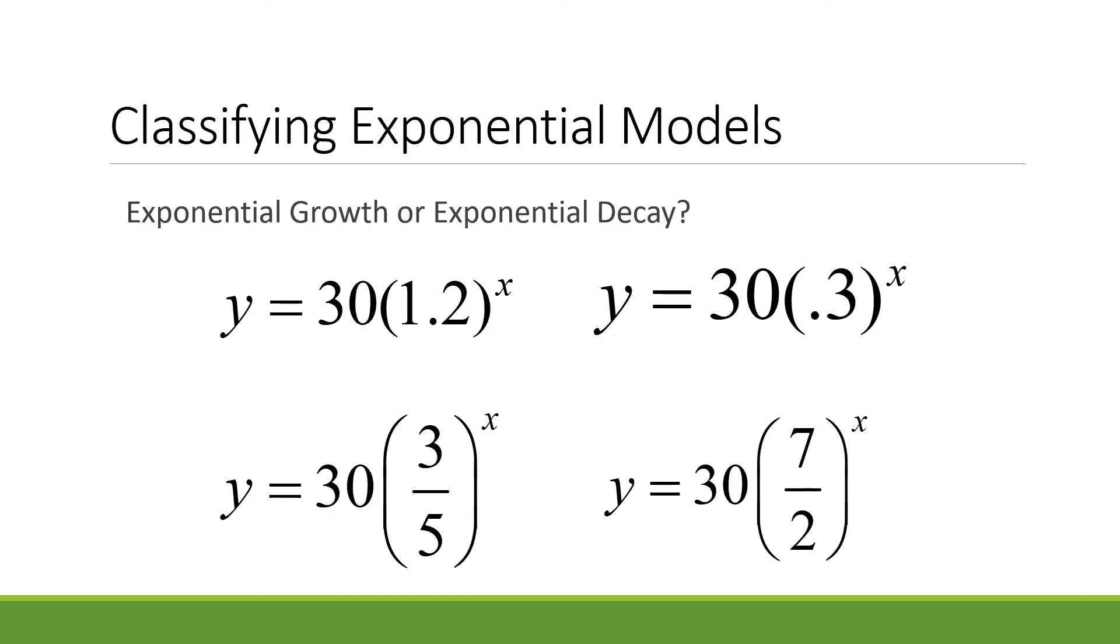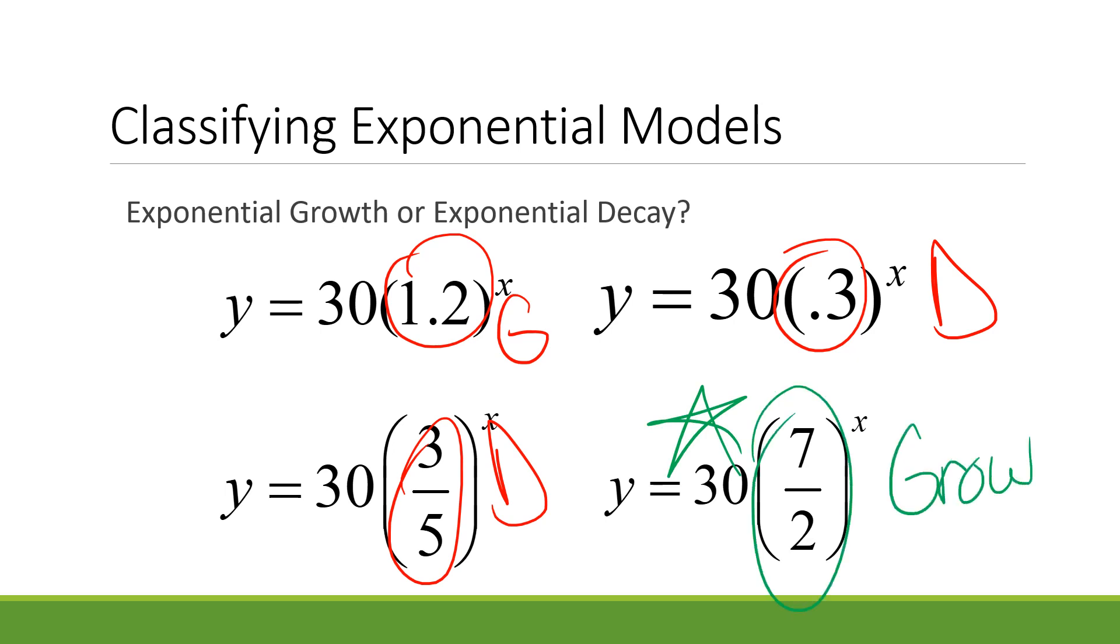All right, quick review. Let's just talk about if these are growth or decay. This would be growth. Point 3 would be decay. 3 fifths would be decay. But more importantly, put a star by this one. 7 halves is growth. A lot of people see a fraction and think decay. No, no, no. 7 halves is 3.5. 3.5 is greater than 1, so it's growth. So keep an eye out for that. Make sure you're looking at the value correctly.